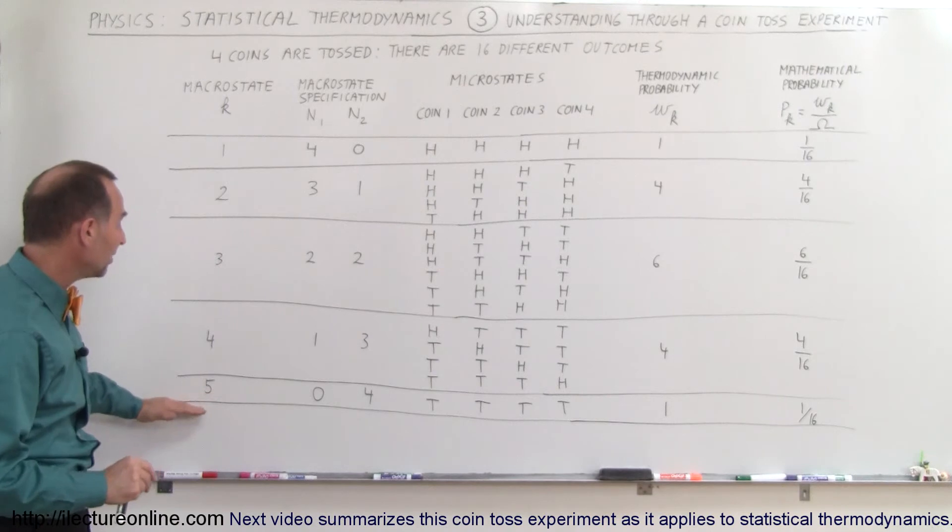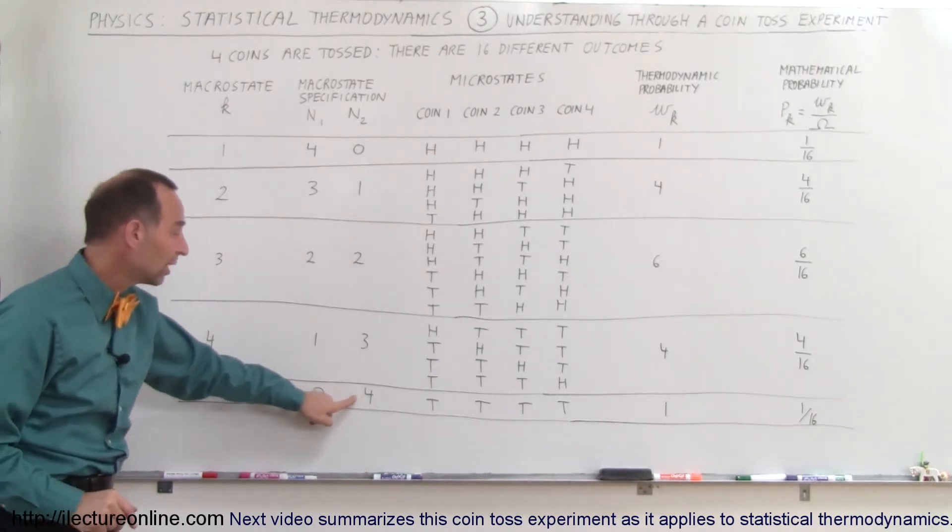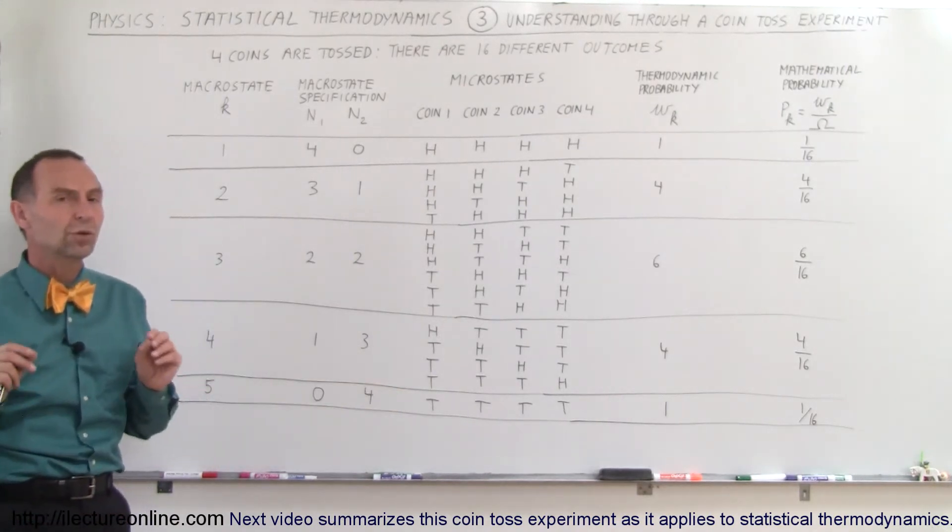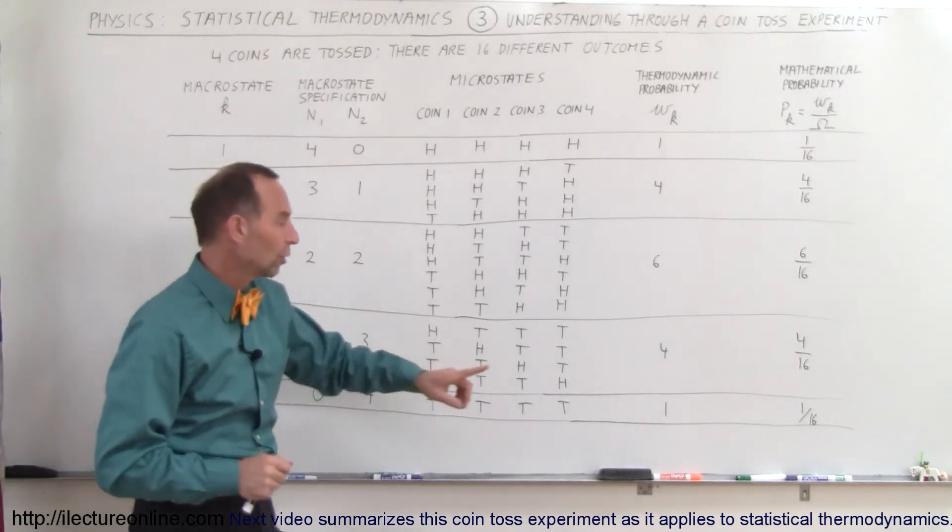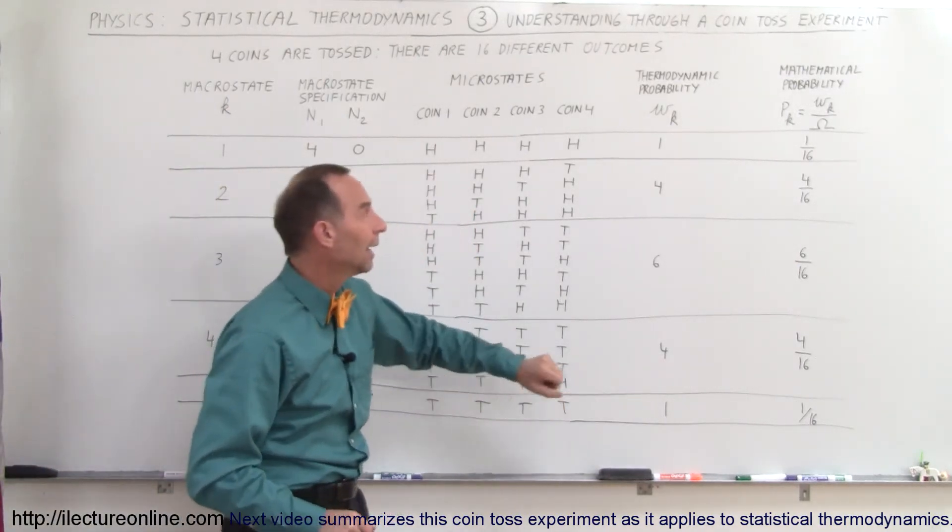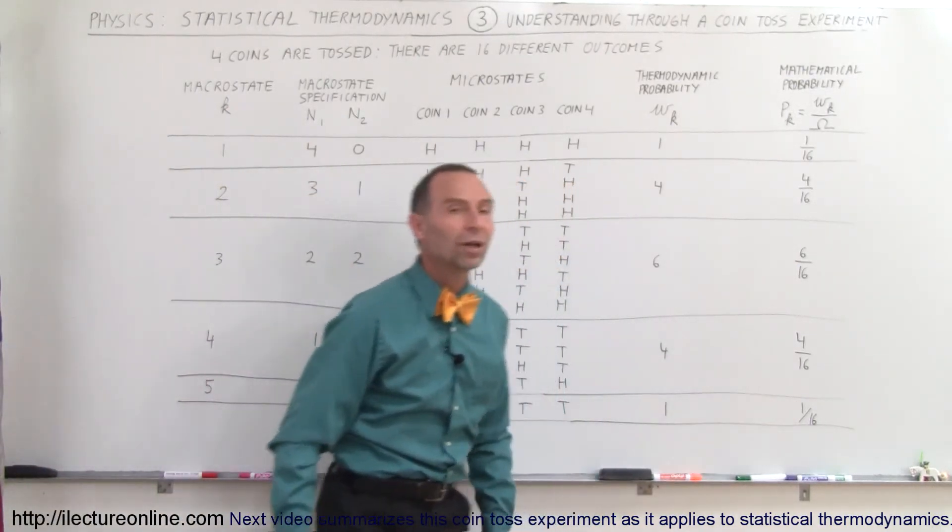Finally, the last macro state is zero heads and four tails. There's only one way to get that. Therefore, the thermodynamic probability is 1, and the mathematical probability is one out of 16.